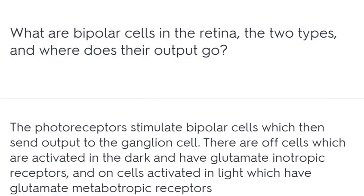What are bipolar cells in the retina and what are the two types? Photoreceptors stimulate bipolar cells, which send output to the ganglion cell. Off cells are activated in the dark and have glutamate ionotropic receptors. On cells are activated in light and have glutamate metabotropic receptors.